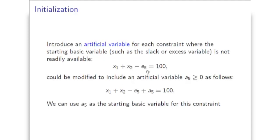Why don't we introduce a new variable - some artificial variable A5 - and use it with the sign that will work? So in this case, if we use plus A5, then by setting all the remaining variables to 0 we'll have A5 equal to 100, and this works as a basic variable. However, the problem is that by introducing this artificial variable we may actually violate the constraint that we have. So the correct constraint was the original one, and when we add A5 with a non-zero value, that constraint will be violated.